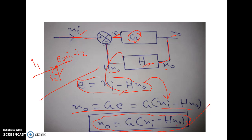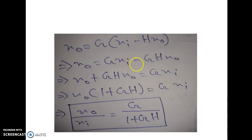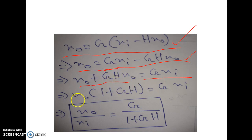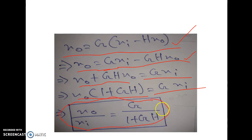Now we will apply some simplification steps and derive one very important formula. We got X_out equals G times (XI minus H·X0). Multiplying out: X_out equals G·XI minus G·H·X_out. Taking GH·X_out to the left-hand side: X_out plus GH·X_out equals G·XI. Taking X_out common: X_out times (1 plus GH) equals G times XI. Therefore, X_out divided by XI equals G divided by (1 plus GH).